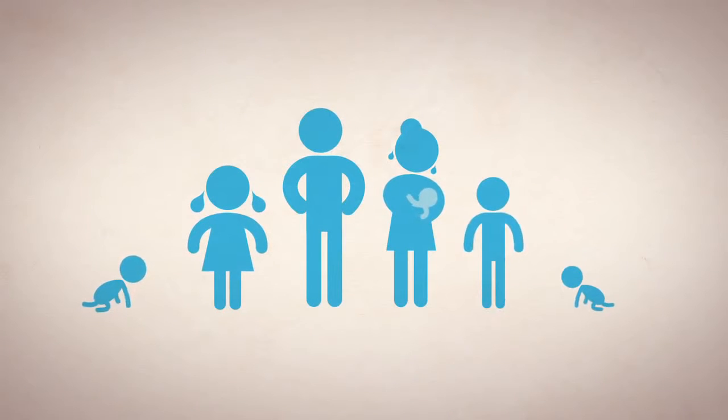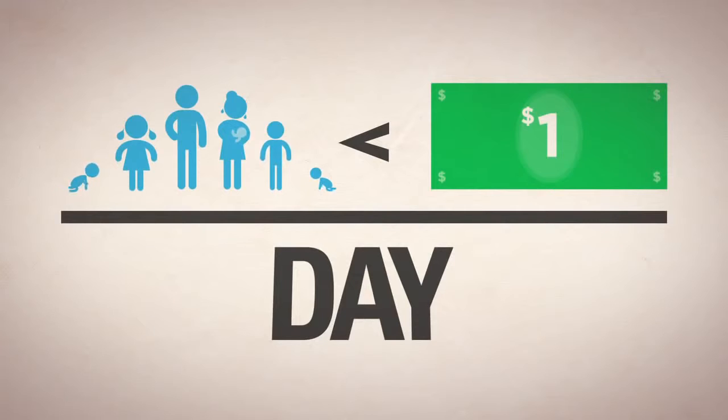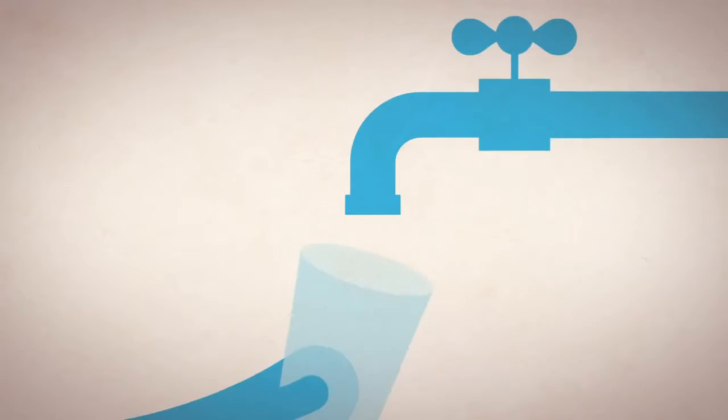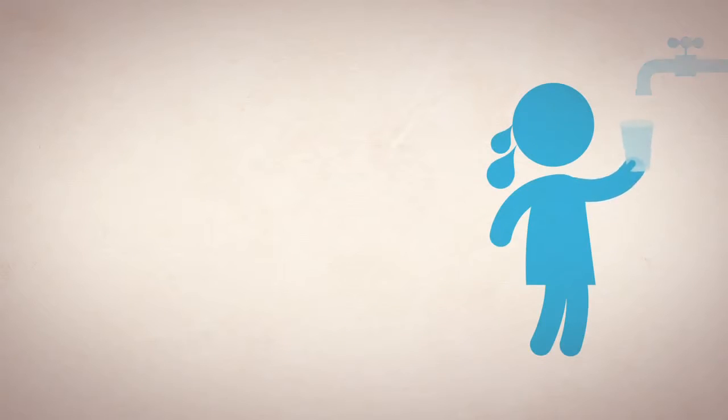Let's look at a family caught in the water crisis. It's likely they live on less than a dollar a day. When they're thirsty, they can't just turn on the faucet for a nice cold glass of water. They don't have a faucet. Instead, the women and children go off to collect water.